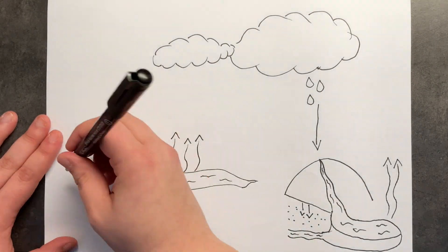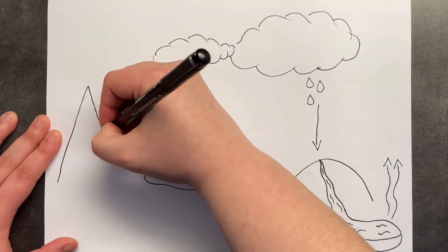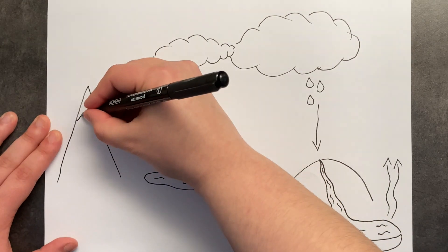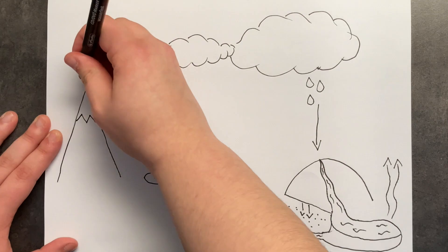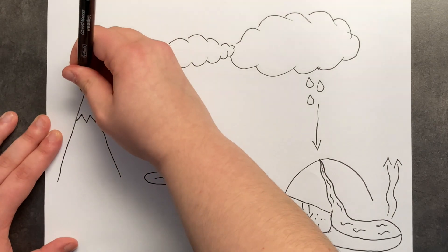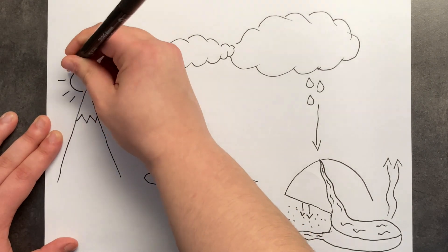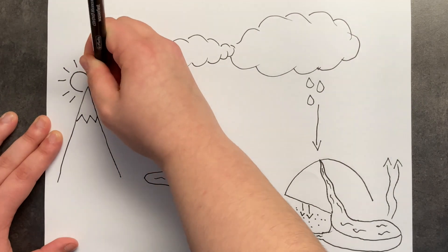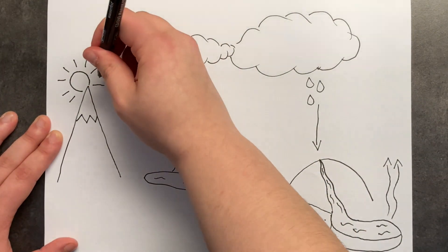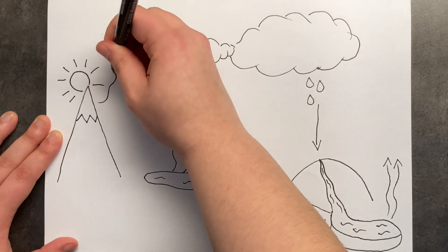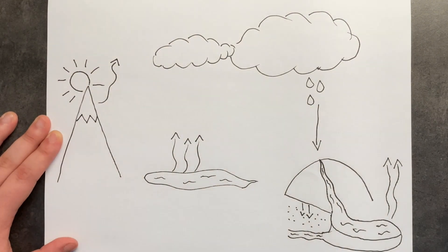Now on top of a very tall mountain, there is usually ice and snow all the time, and ice is the solid form of water. Now sometimes, if the sun is warm enough, the ice turns into steam directly, and this is called sublimation. So the solid becomes gas without being liquid first in between.